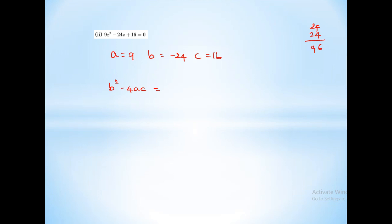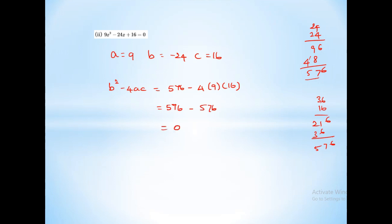Next sum: a is equal to 9, b is equal to minus 24, c is equal to 16. So B²-4ac equals 24 squared minus 4 into 9 into 16. 24 squared equals 576. 4 into 9 into 16 equals 576. So 576 minus 576 equals 0. Therefore, roots are real and equal.